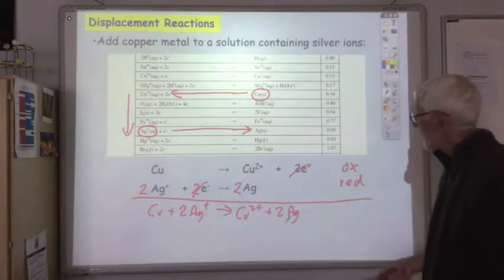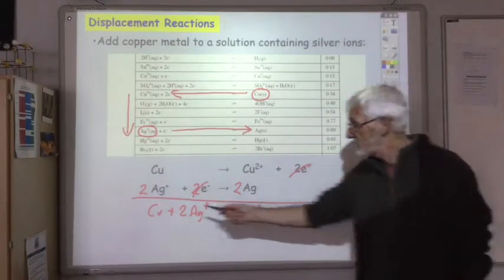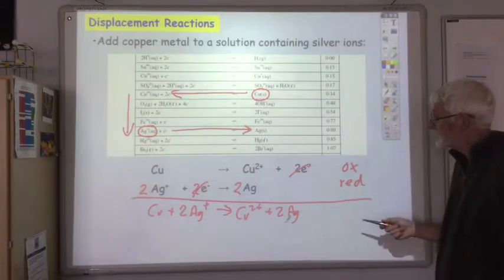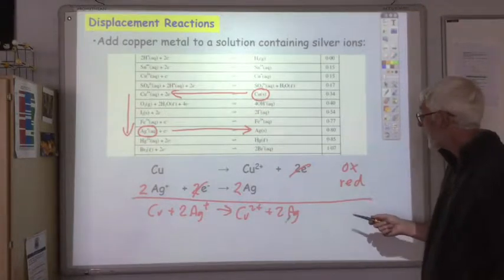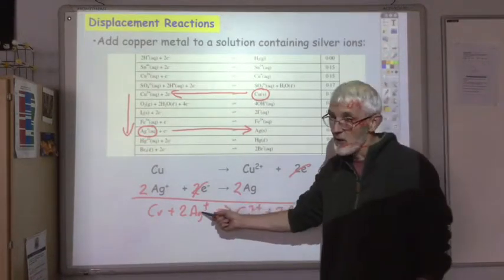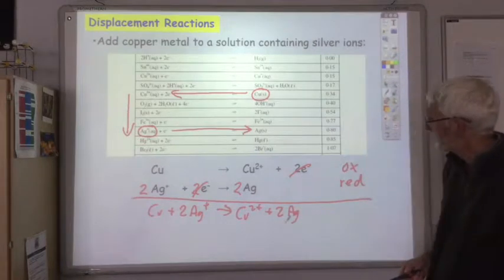The copper has been oxidised, so it is the reducing agent. The silver ions are being reduced, so they are the oxidising agent.